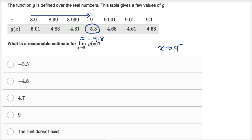Something interesting happens: when we get exactly to nine, we seem to get further away from negative 4.8 — we jump to negative 5.3. This tackles a key misconception about limits. A limit is the value that the function is approaching as x approaches a certain value. It isn't necessarily what the function is defined at that point. You can be approaching a different value than what the function equals there.